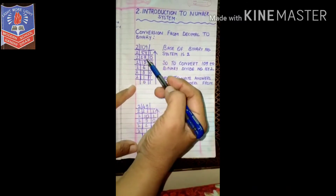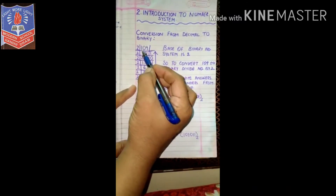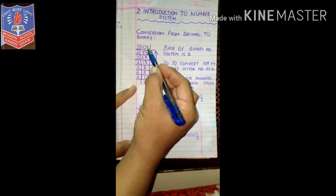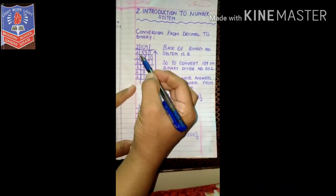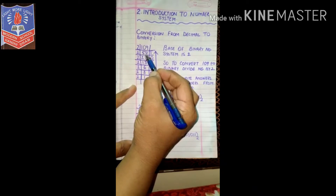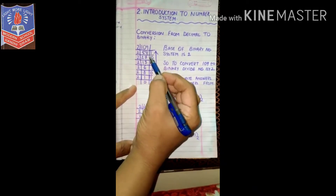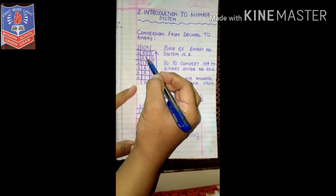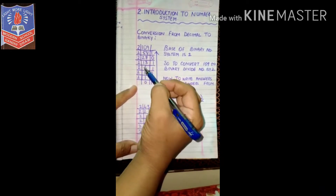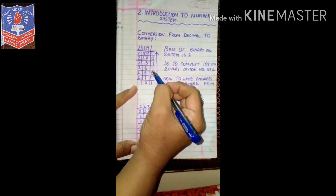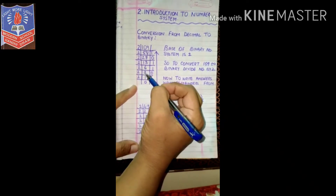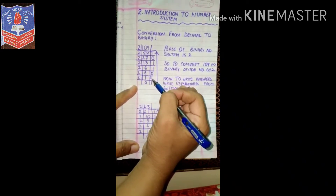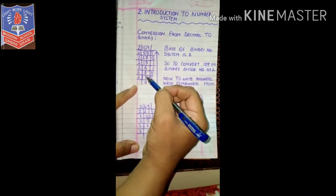In this pattern we will be doing the conversion. 109 divided by 2: 2 fives are 10, 2 fours are 8, remainder 1. Then 2 twos are 4, remainder 1. 2 sevens are 14, remainder 0. 2 ones are 2, 2 threes are 6, remainder 1. 2 sixes are 12, remainder 1. 2 threes are 6, remainder 0. 2 ones are 2, remainder 1. 2 zeros are 0, remainder 1.